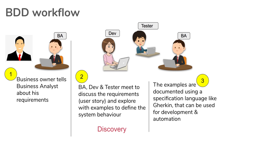After we have some agreed examples, we enter a phase where these agreed examples are documented using a specification language like Gherkin, so that it can be understood by all teams — both technical and business. It can also be further used for development and automation. This process where examples are documented using a specification language is called formulation.